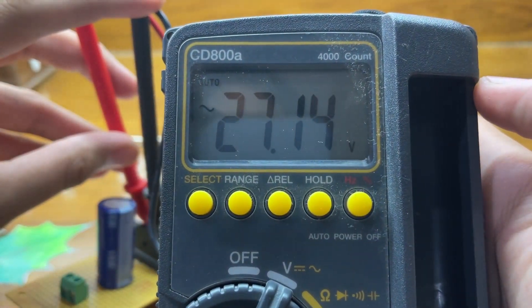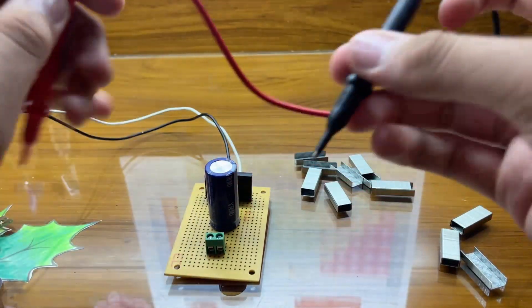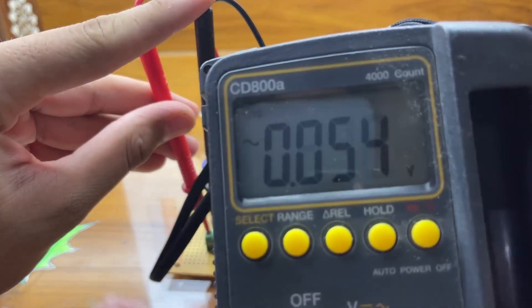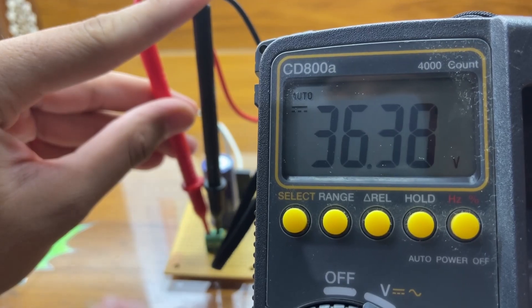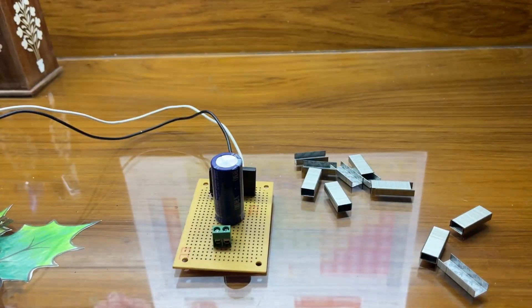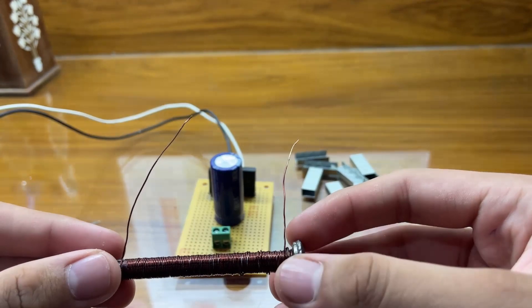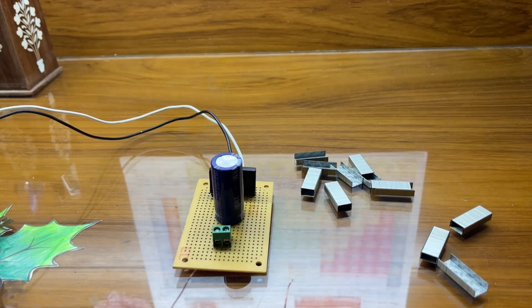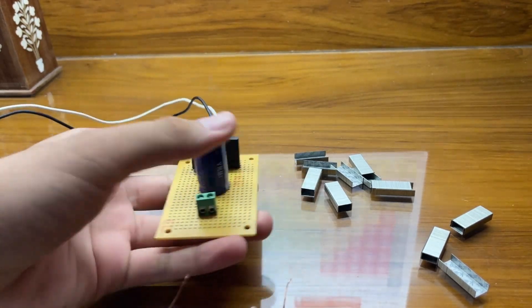We're getting 27 volts average here. I'll be connecting this to the DC side also just to confirm we're getting around the same volts. Yeah, 36 volts. Let's connect the electromagnet with it.